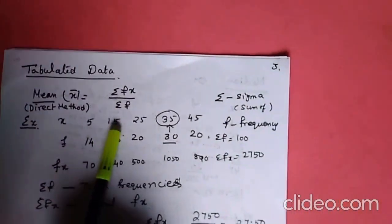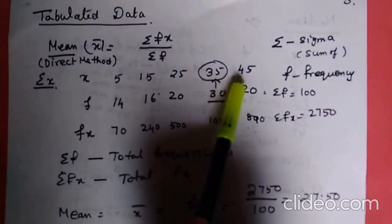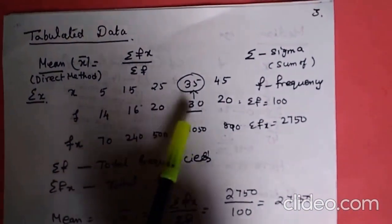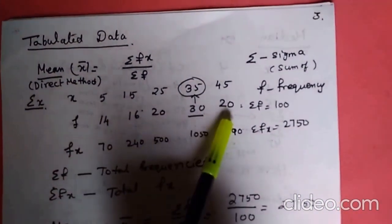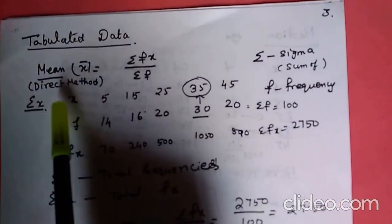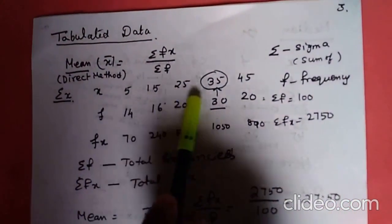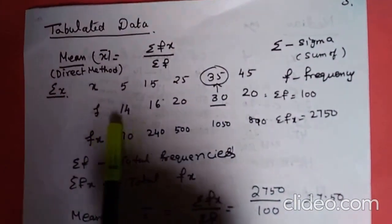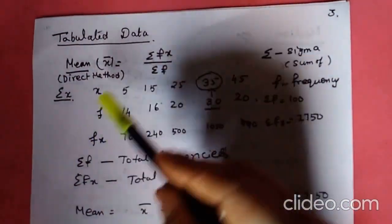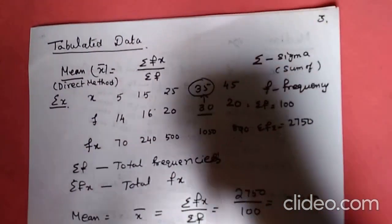The x values are 5, 15, 25, 35, 45, and the frequencies are 14, 16, 20, 30, 20. These are the called the tabulated form — x values are given and frequency values are given. Now you are going to find the mean, median, and mode.